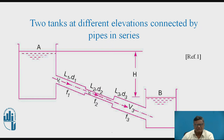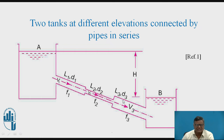We have taken two tanks which are at different elevations. The tank on the left hand side is at a higher elevation and the tank on the right hand side is at a lower elevation. In this compound pipe, the first section is of larger diameter, then the second section is of smaller diameter, and we have again a larger diameter for the third section. As said earlier, the diameters should be different and end to end connections should be there — those are the conditions for compound pipes.